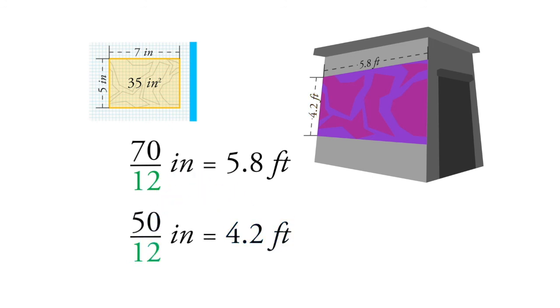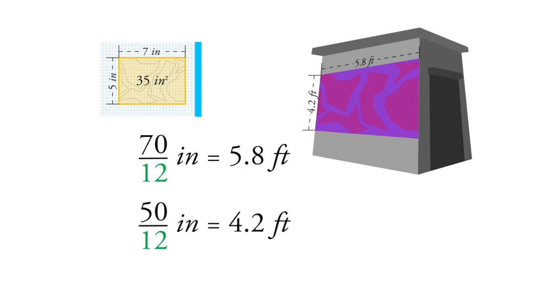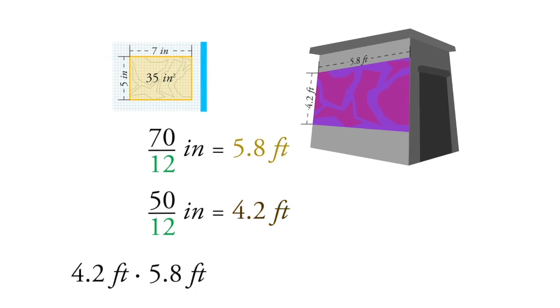So we have new dimensions instead of 5 and 7, we have 4.2 feet and 5.8 feet. And when we run those out, 4.2 feet times 5.8 feet, we get something pretty close to 24 square feet.